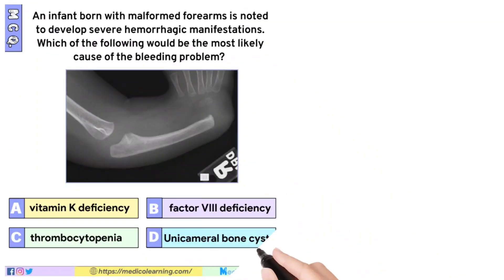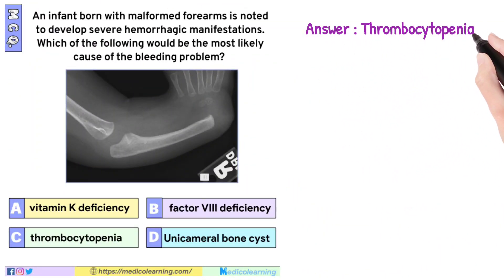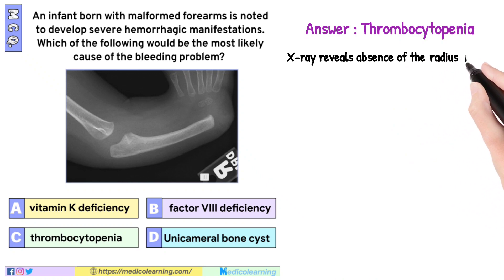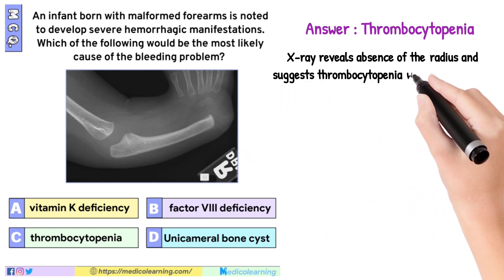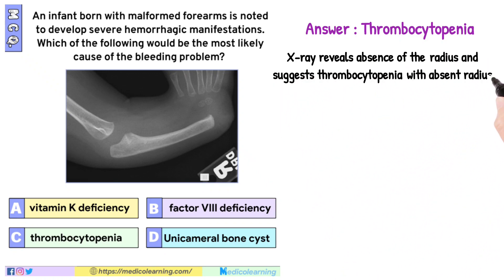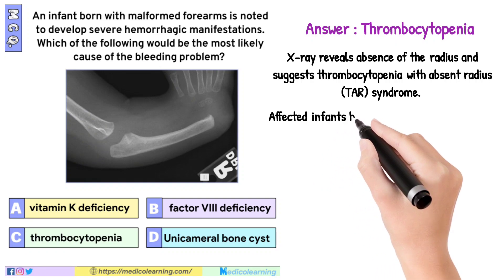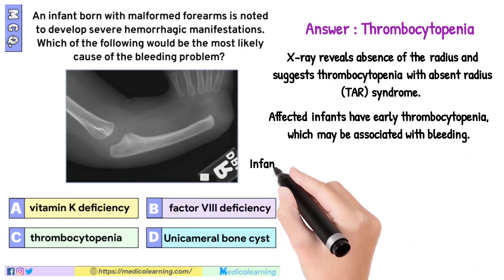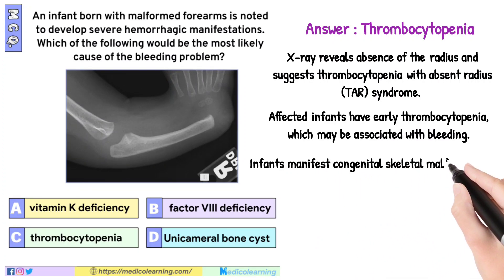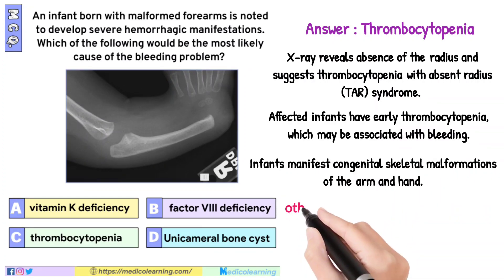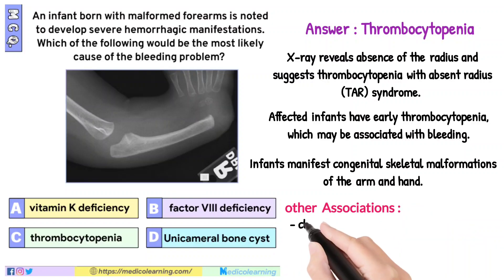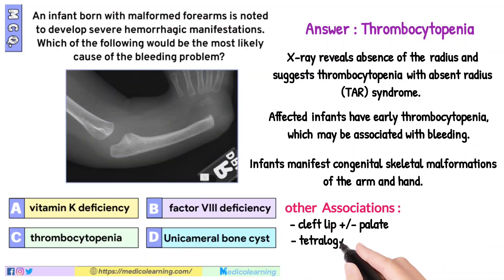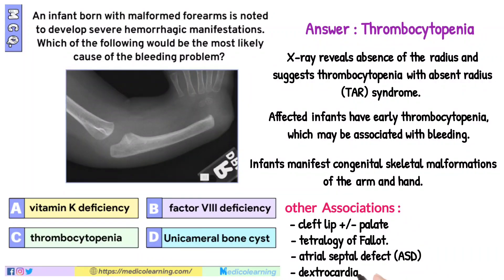In this question, the answer is Thrombocytopenia. X-ray reveals absence of the radius and suggests thrombocytopenia with absent radius — TAR syndrome. Affected infants have early thrombocytopenia, which may be associated with bleeding. Infants manifest congenital skeletal malformations of the arm and hand. Other associations include cleft lip plus or minus palate, congenital cardiac anomalies in approximately 30% — tetralogy of Fallot, atrial septal defect (ASD), and dextrocardia.